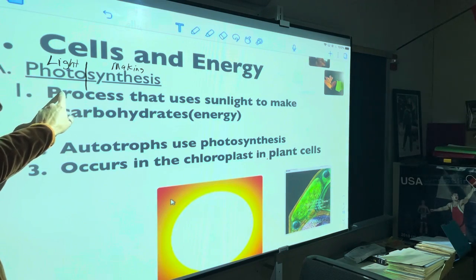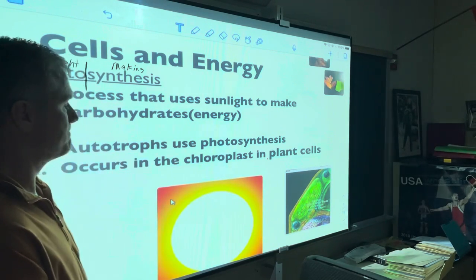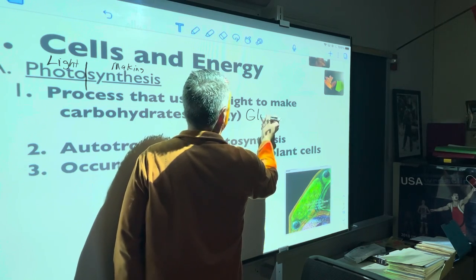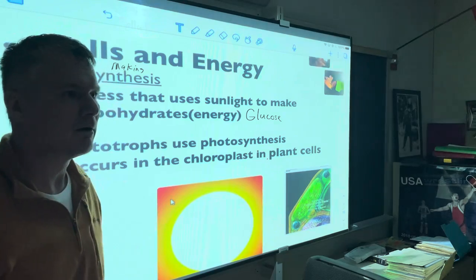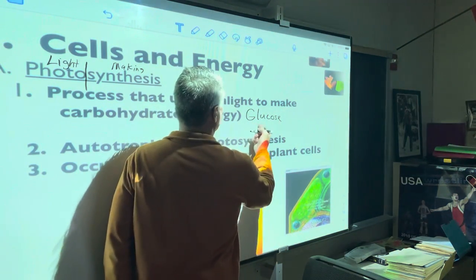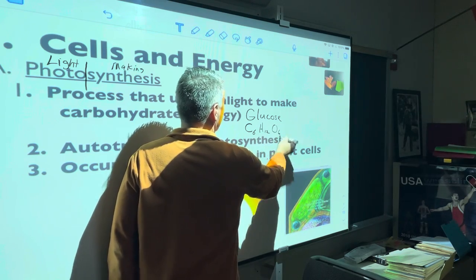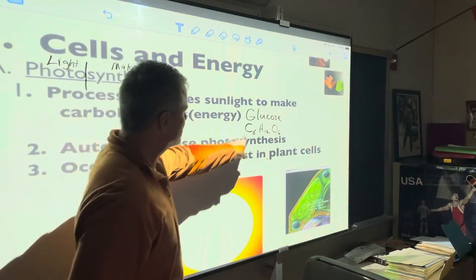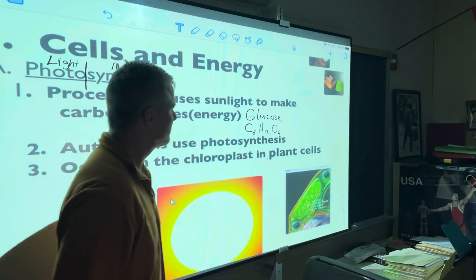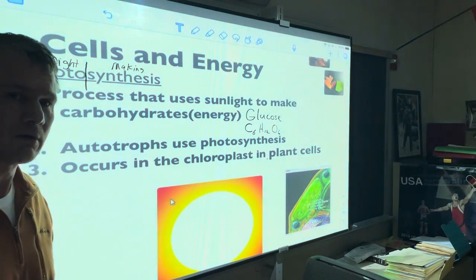Now if you want the actual definition - right here: the process that uses sunlight to make carbohydrates, or energy. The name of the sugar all plants make starts with a G - glucose. How do you know it's a sugar? It's got '-ose' at the end. Glucose - its chemical structure is C6H12O6. It's a molecule made up of carbon, hydrogen, and oxygen: six carbons, twelve hydrogen atoms, six oxygen atoms. When we eat fruity pebbles in the morning, our body is quickly turning that into glucose so we can power our cellular respiration.